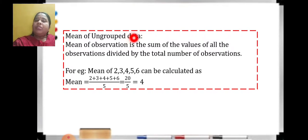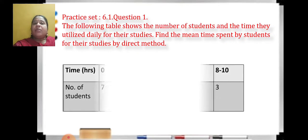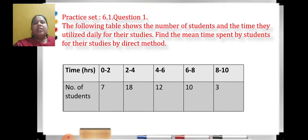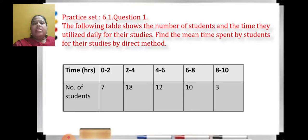This can be asked as a one-mark question even though it is not in the textbook — for ungrouped data, add and divide by the total number of observations. Now, suppose the data is grouped, as in practice set 6.1. Class intervals 0 to 2, 2 to 4, 4 to 6, 6 to 8, and 8 to 10 are given. To find the mean, we use a method called direct method, which we have also done last year.